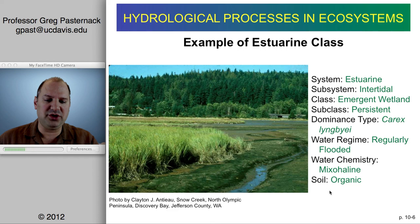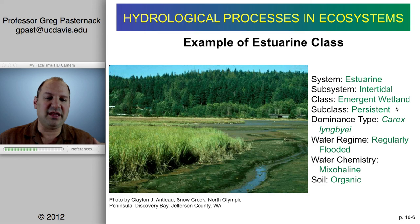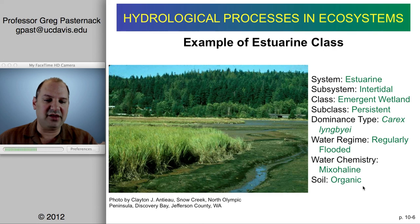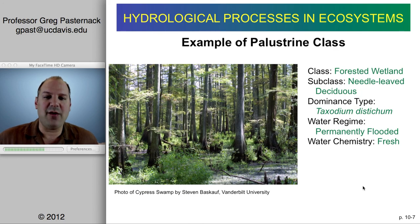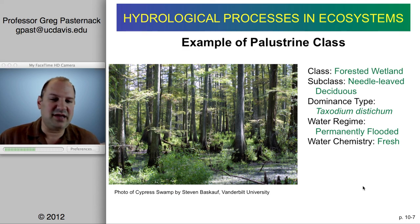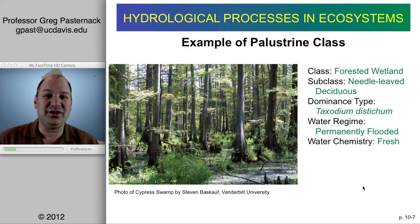Here are two examples. One shows the estuarine class: estuarine, intertidal, emergent wetland, persistent — meaning perennially there, dominated by a Carex species, water regime regularly flooded, mixohaline water chemistry, and organic soil. Contrast that with a palustrine class — a cypress swamp: forested wetland, needle-leaf deciduous species, perennially flooded, fresh water. You can see how the words are just describing what you see in the photo.